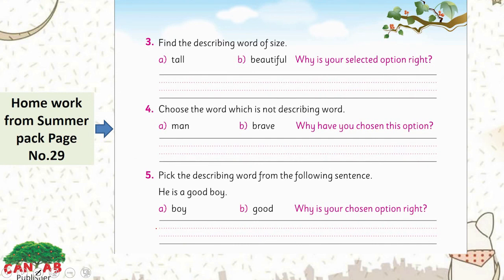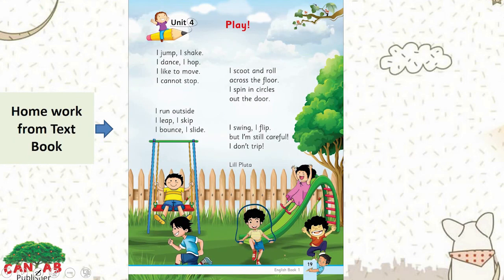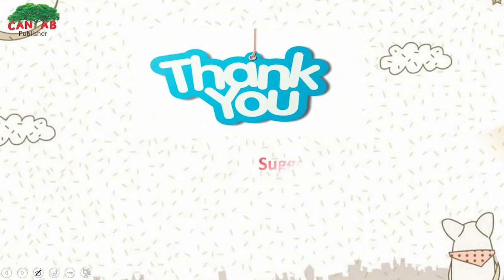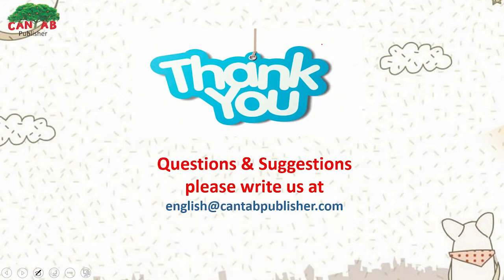Questions number three, four, and five are also your homework from the summer pack. From the textbook, read this poem and identify any describing words you can find — you can underline the describing words like this. I hope you have enjoyed my lesson. Thank you.